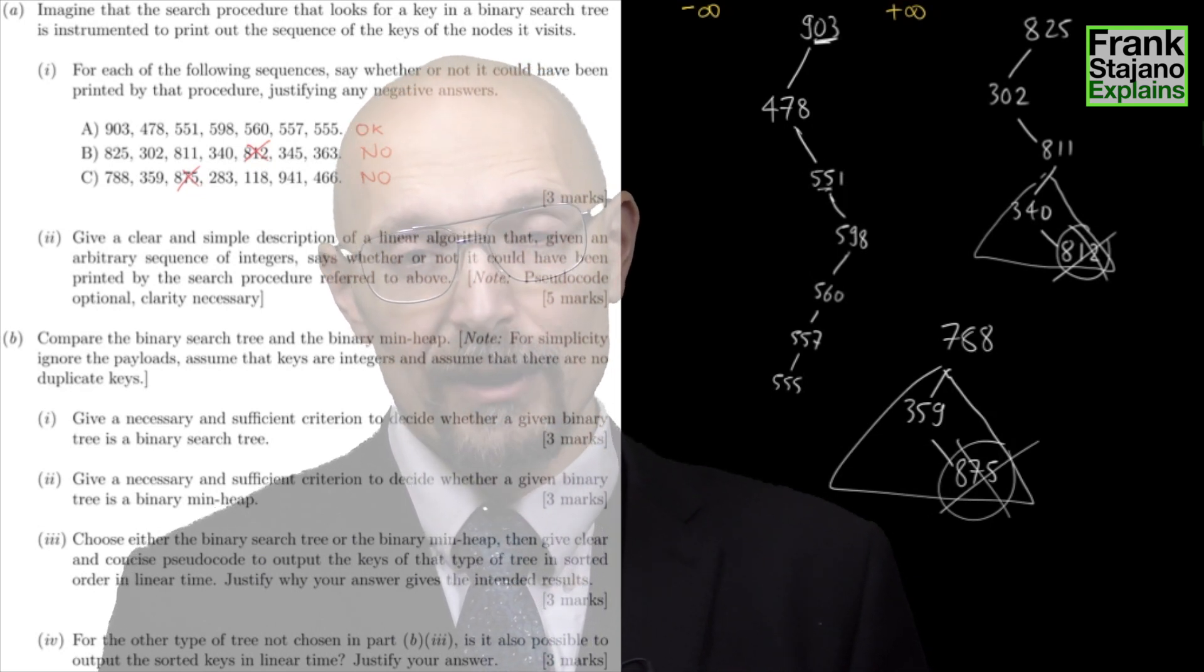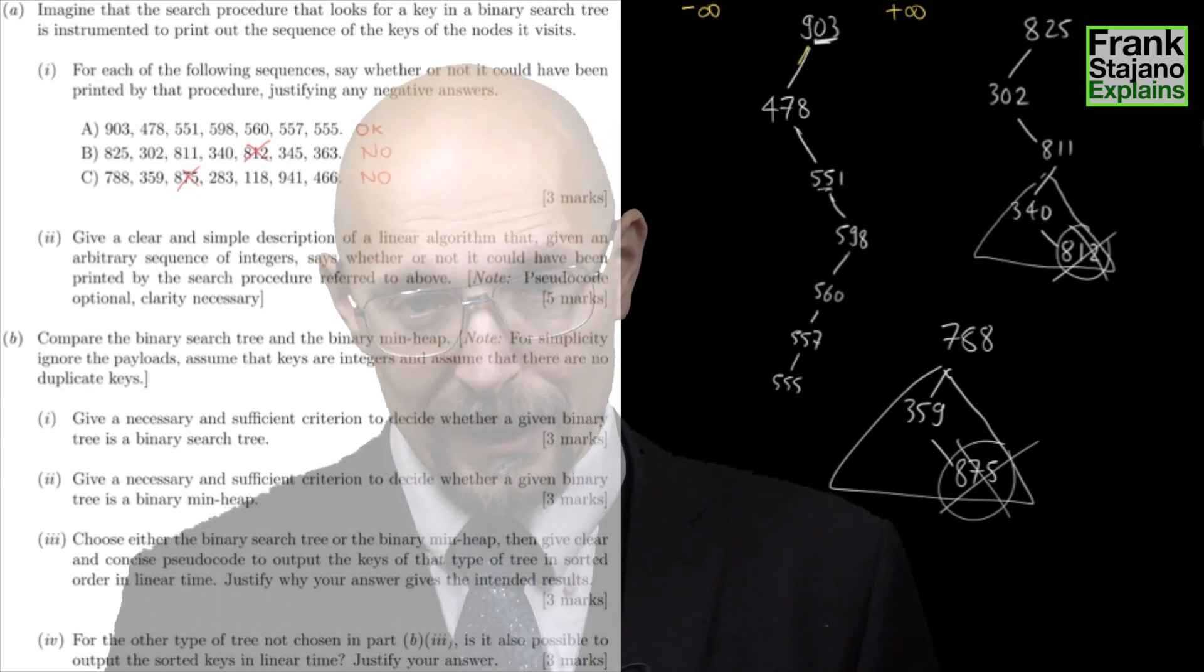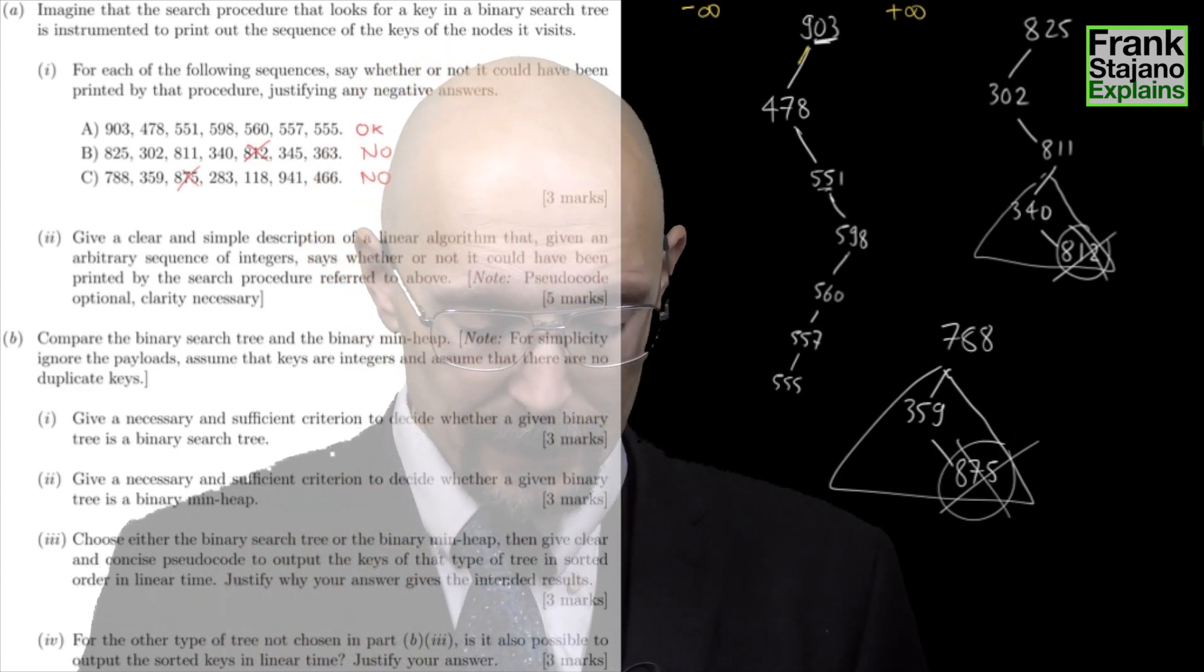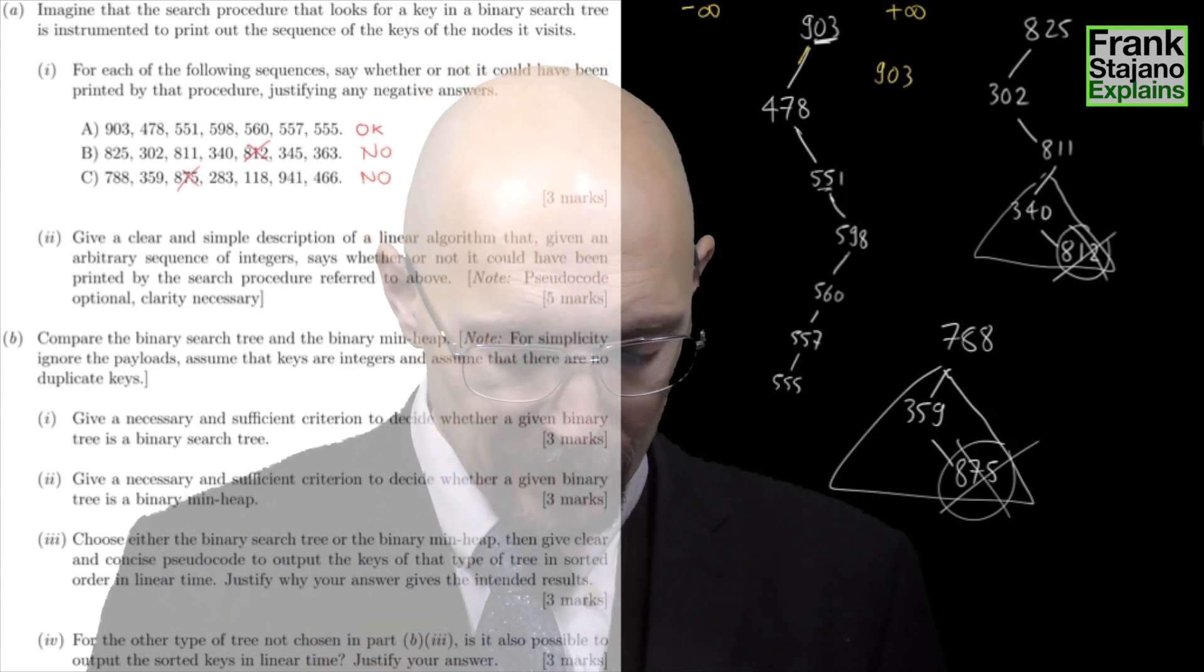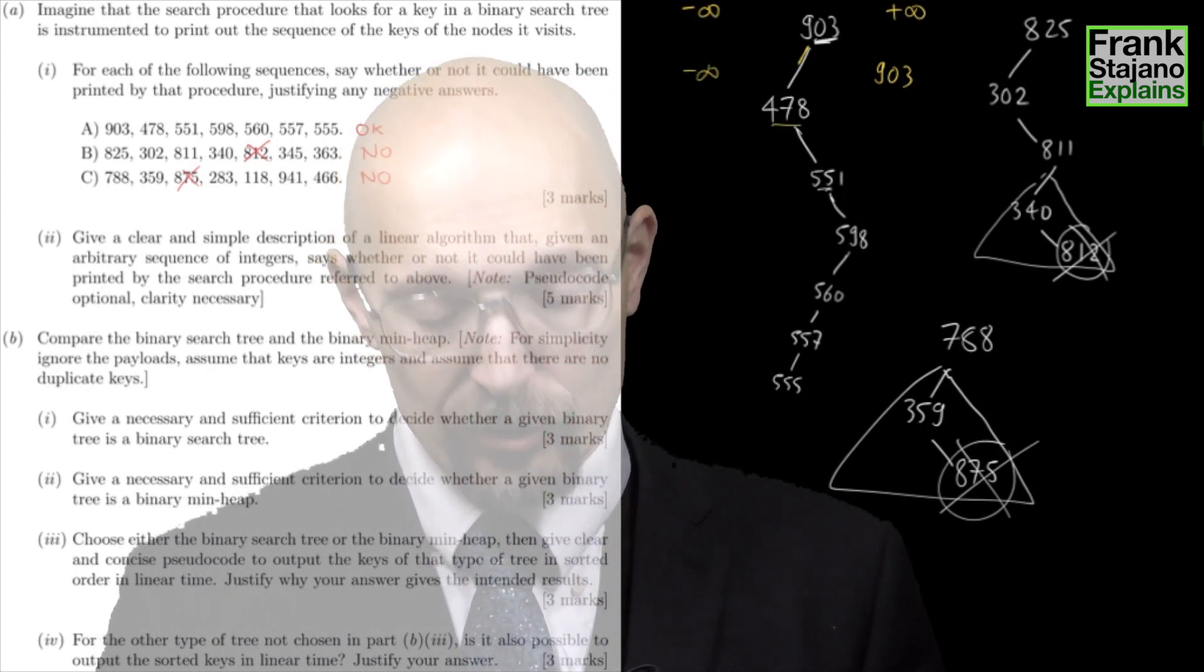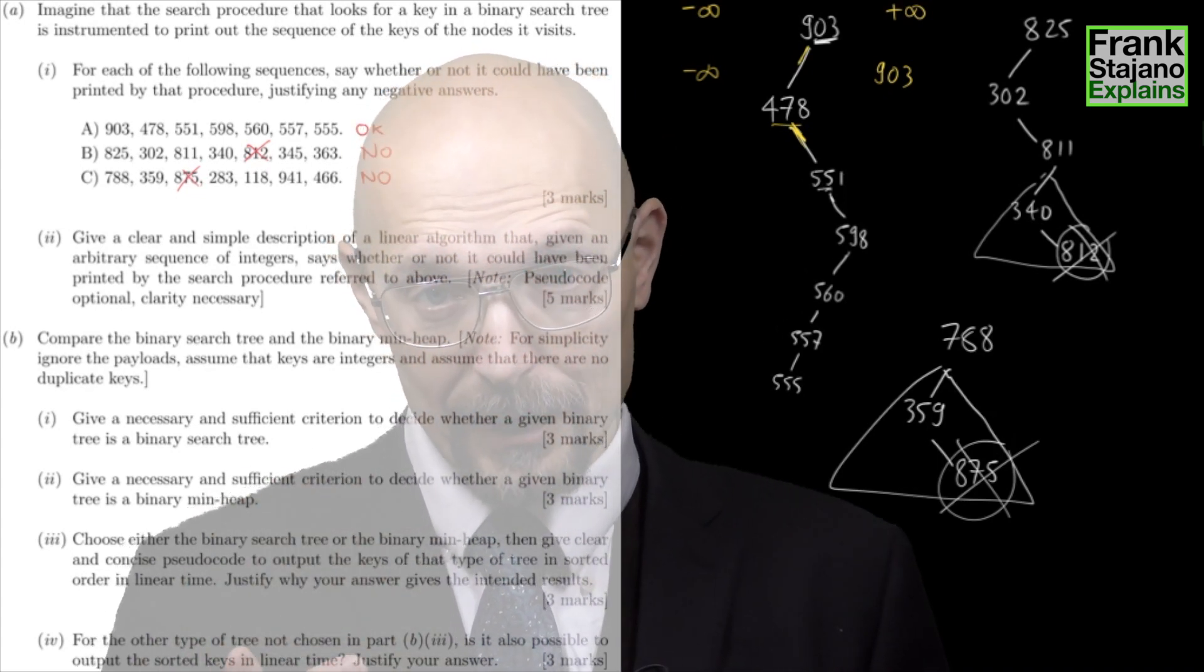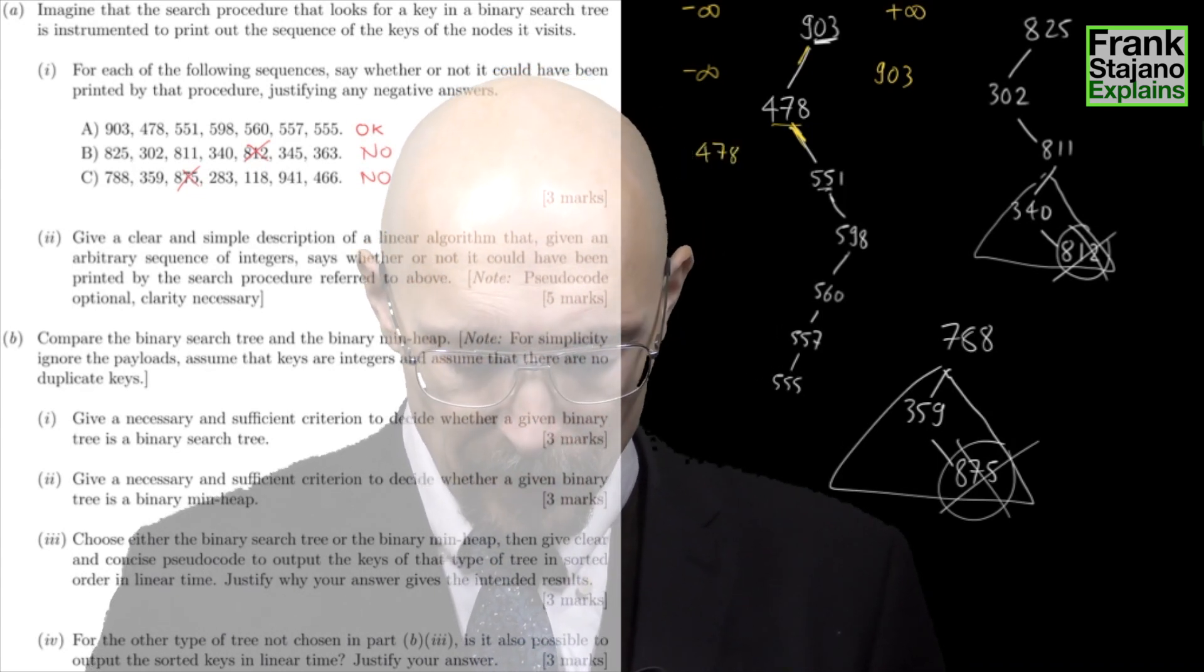Do I change the boundaries then, having received 903? Well, not yet. I have to decide based on where I go from there. So if I'm going left, as I do, then at that stage I understand nothing in the left subtree of 903 can exceed 903. So the new max boundary becomes 903. Then I receive 478, which is within those bounds. Which way do I go from there? I go right. So in the right subtree of 478, nothing can be smaller than 478. So the new minimum boundary becomes 478.